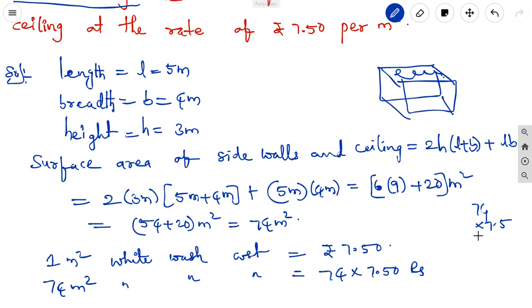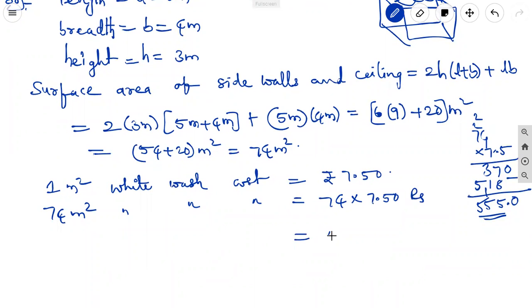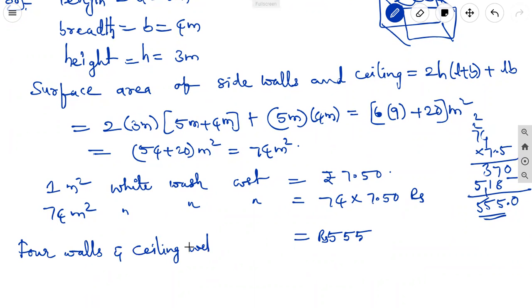74 × 7.5: computing 74 × 7.5 = 555 rupees. So the cost of whitewashing the four walls and ceiling is 555 rupees.